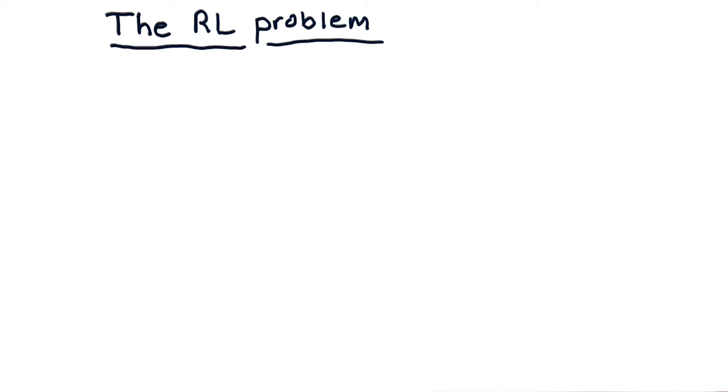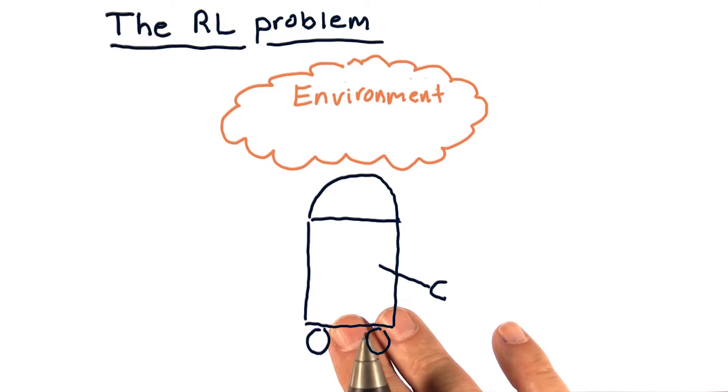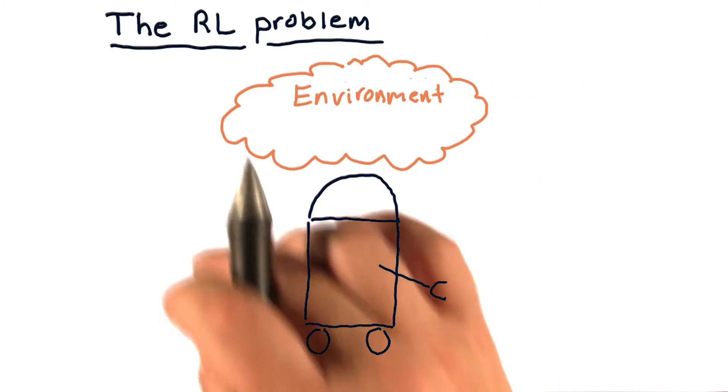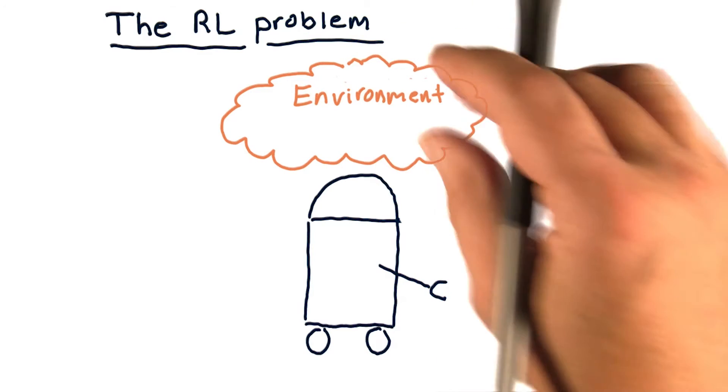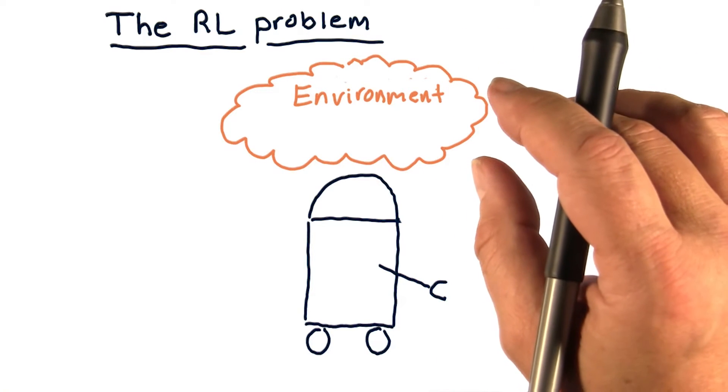Because I started out as a roboticist, I'm going to first explain this in terms of a problem for a robot. So here's our robot here, and our robot is going to interact with the environment. We represent the environment as this sort of cloud up here.